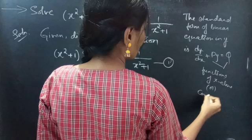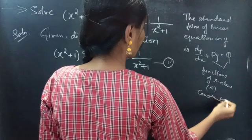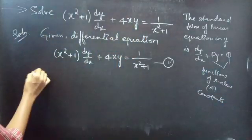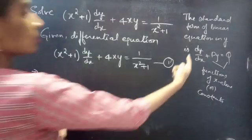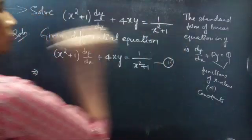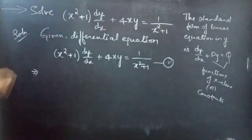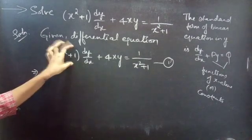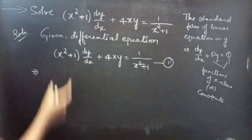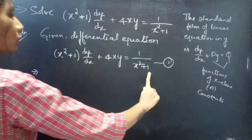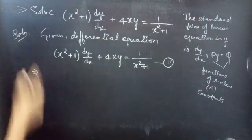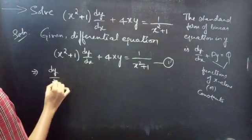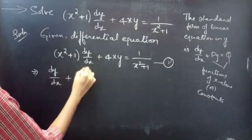P and Q are functions of x alone or constants. Now if you notice, the coefficient of dy/dx must be 1. But here in our equation we have (x² + 1), so we will eliminate this. In order to eliminate this, we have to divide the whole equation by (x² + 1).